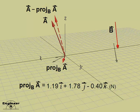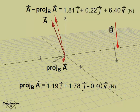To compute the vector component that is orthogonal to vector B, subtract the vector A projection from the original vector A.